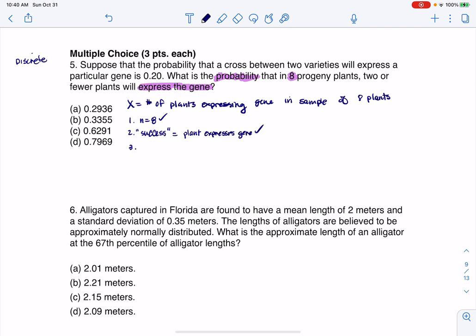Alright, I can talk about that the trials are independent, because one plant expressing the gene will not affect whether or not the next plant will express the gene. And they told me the probability of success was 20%. So since I can say yes to all of those things, I am in a binomial distribution.